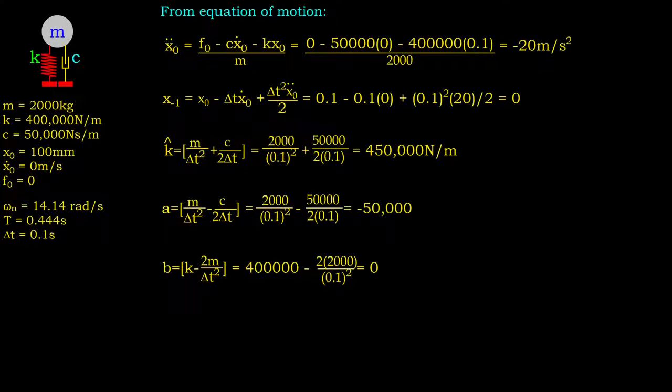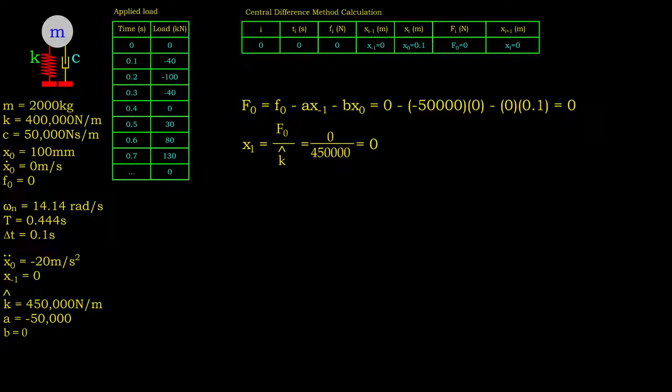Next, from the initial displacement and velocity, we first calculate the initial acceleration. Then we can straight away determine x at instance of negative 1 and constants such as effective stiffness a and b. Based on the time step we chosen, let's extract the loading data as shown in this table.